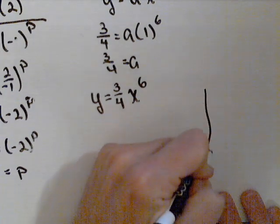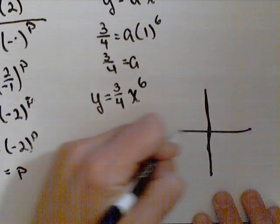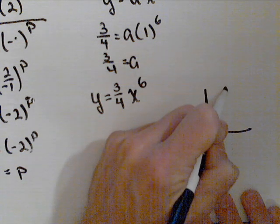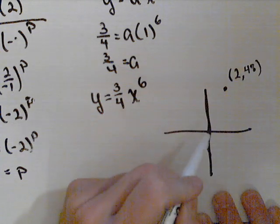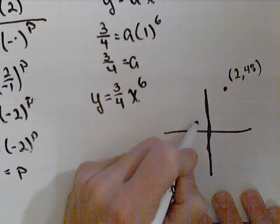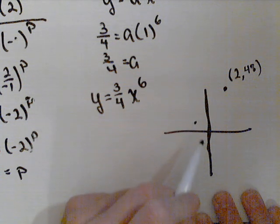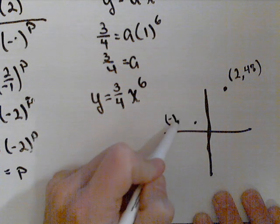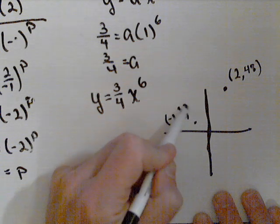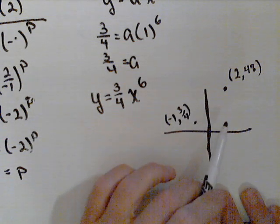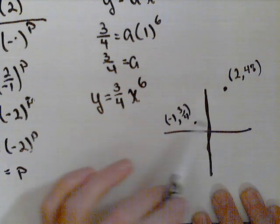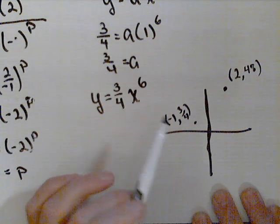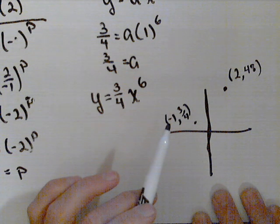So our power function goes through (2, 48), which would be up here somewhere. And (-1, 3/4), which is down here somewhere. So, an interesting thing about power functions is if they're defined for both positive and negative, if it's defined for all reals, then it has to be either even or odd.